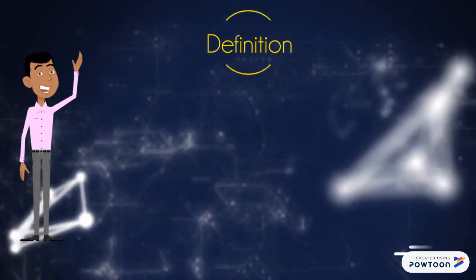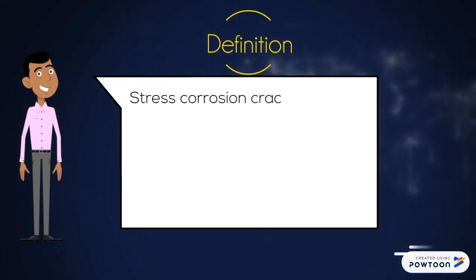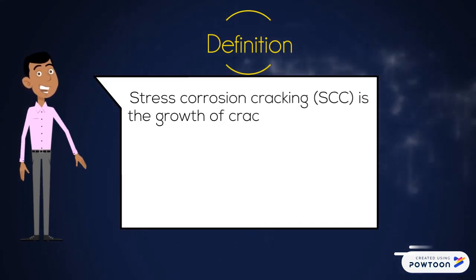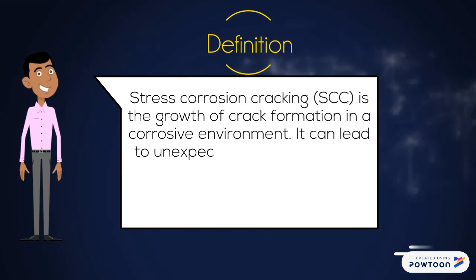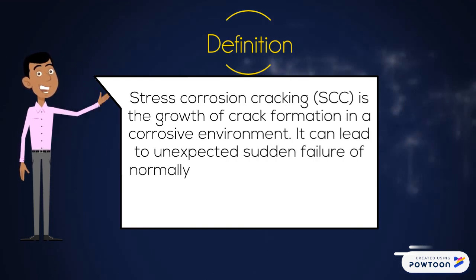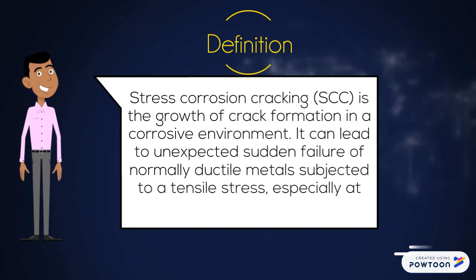So basically, stress corrosion cracking is the growth of crack formation in a corrosive environment. It can lead to unexpected sudden failure of normally ductile metals subjected to a tensile stress, especially at elevated temperature.